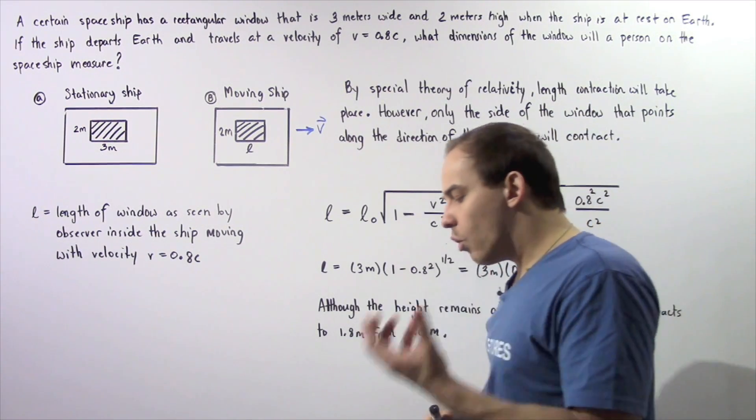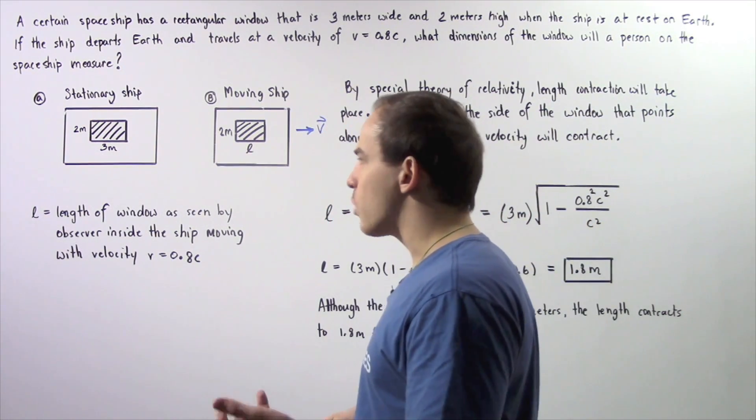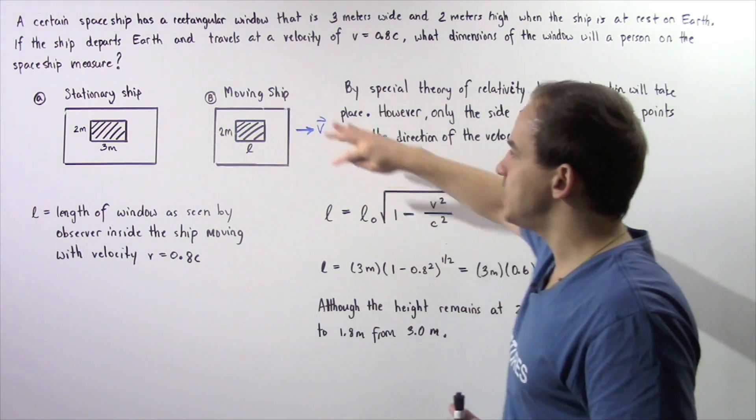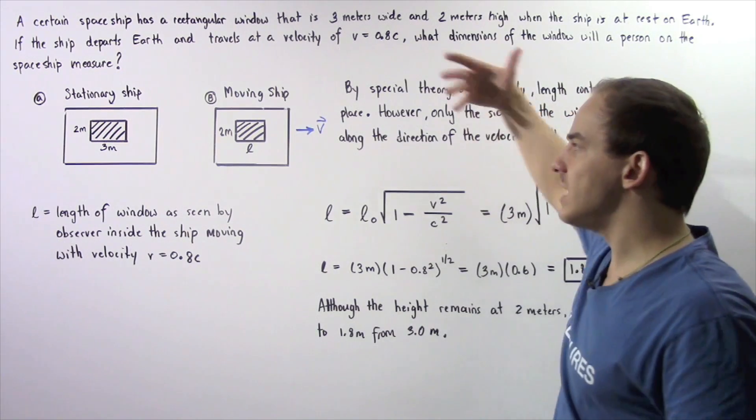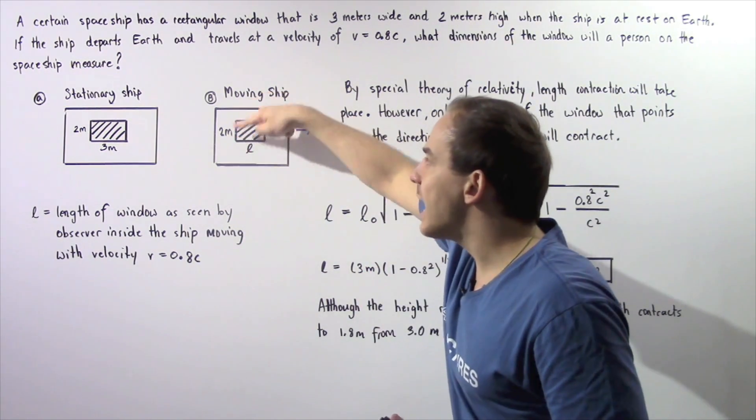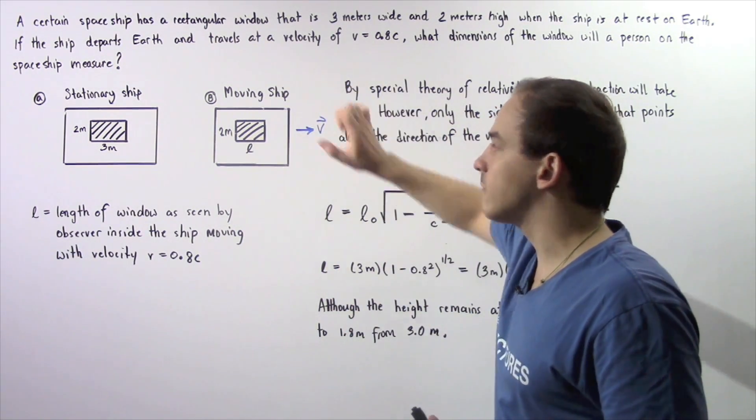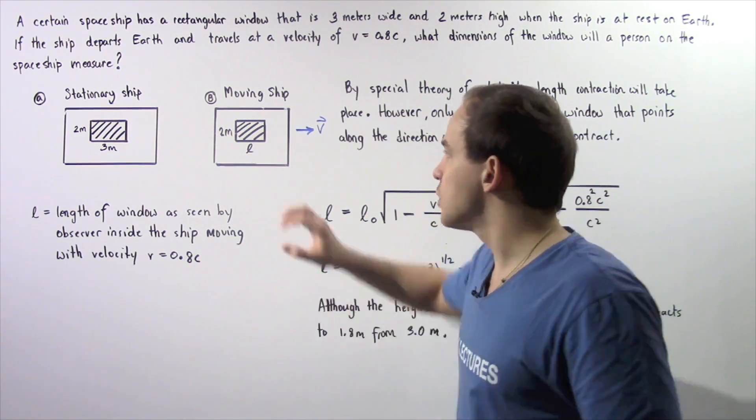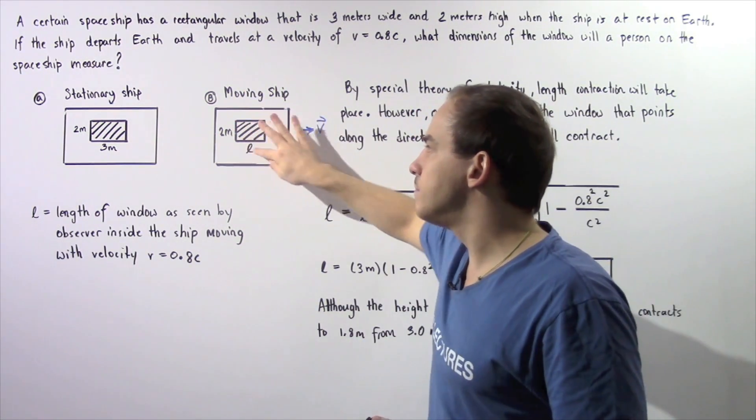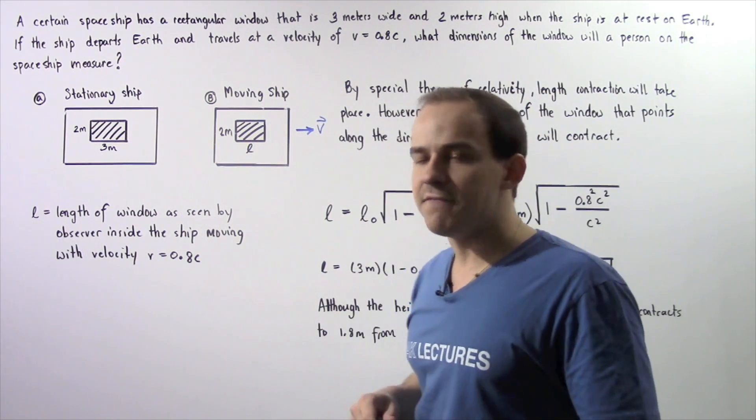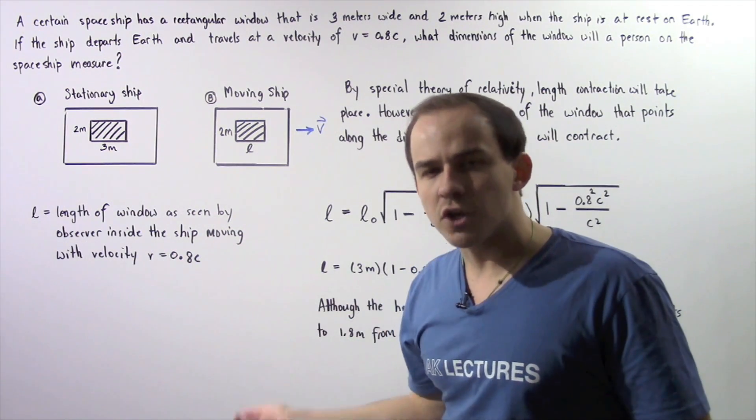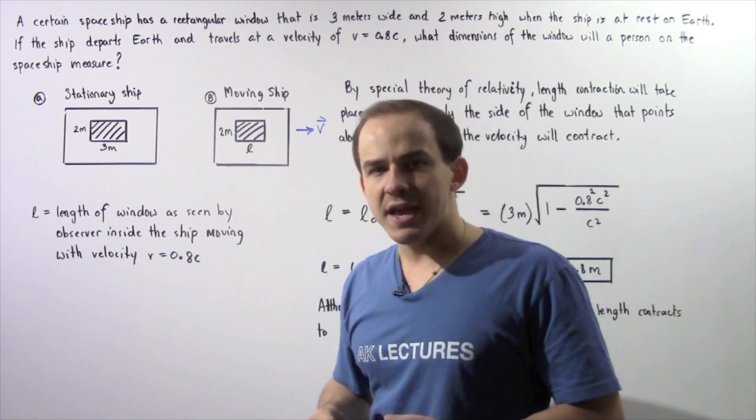Why is that? Well, according to the special theory of relativity, only the side of the window that points in the same direction as the velocity of our object will actually contract. Because this height is perpendicular with respect to our velocity, the height will not change. So the height of the window is still 2 meters, but the length is given by L, which we're trying to find.